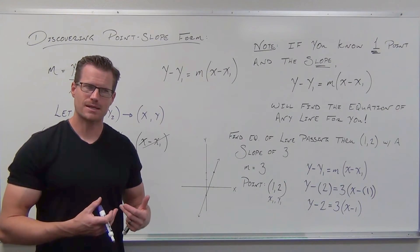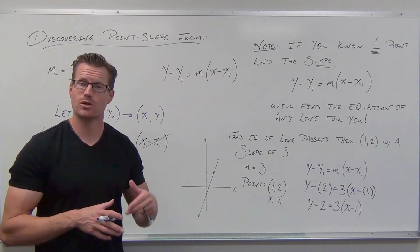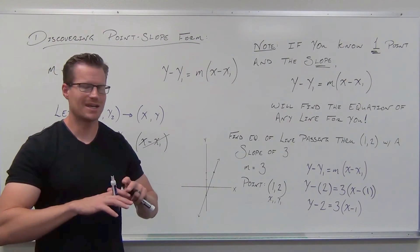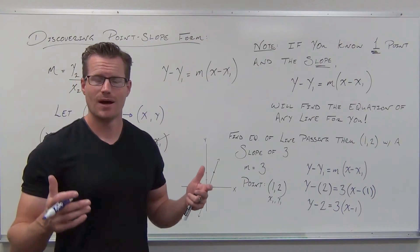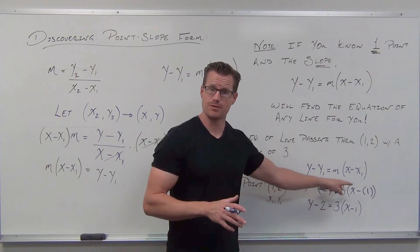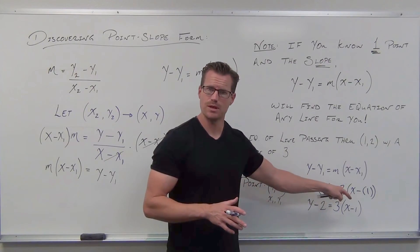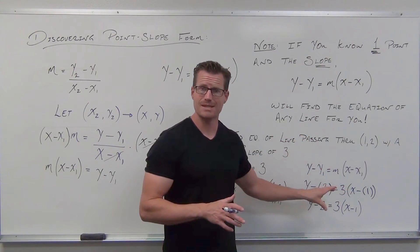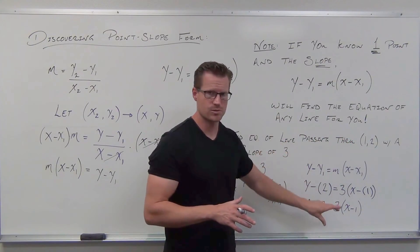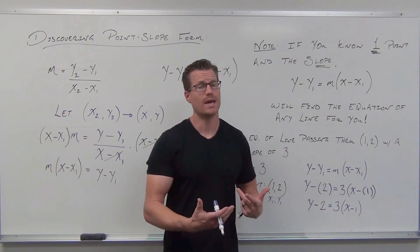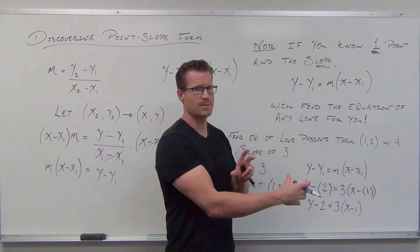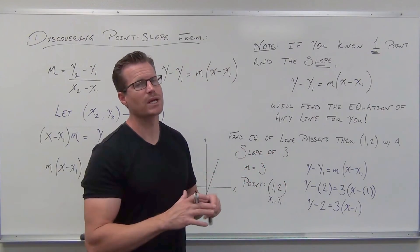However, it doesn't really help us graph. And so, to go a little bit further, I want to simplify. Just like we would simplify any other equation ever, I want you to solve for y. That means we'll distribute, we'll simplify both sides first, and then we'll get y by itself. Basically, you'll distribute, and then add or subtract. That's all we ever have to do to get point-slope into slope-intercept. And slope-intercept is really nice to graph.